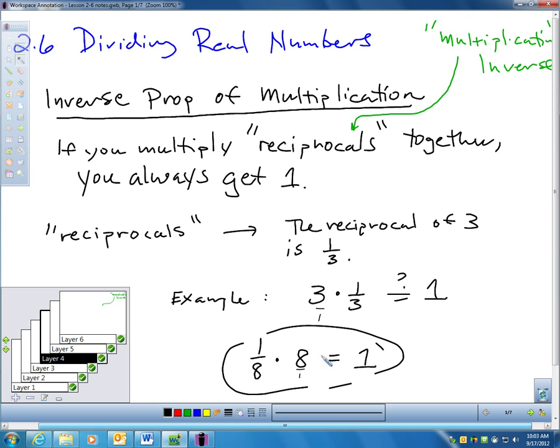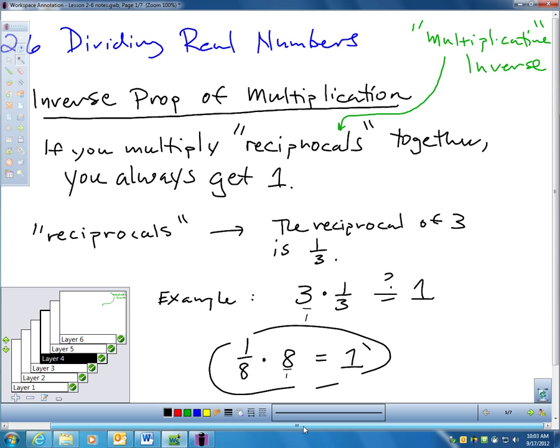The reason reciprocal is related to this property is the term multiplicative inverse. Basically, it's another way of saying reciprocals. So the Inverse Property of Multiplication is simply saying, if you take reciprocals and multiply them together, you always get 1. You'll be asked about reciprocals in your homework, like in Numbers 3 to 10, they're going to ask you to find the multiplicative inverse of the number. In other words, that's just fancy math speak for find the reciprocal.